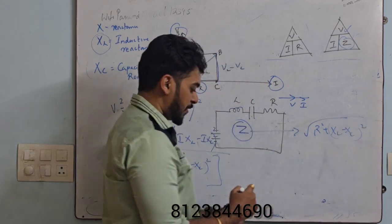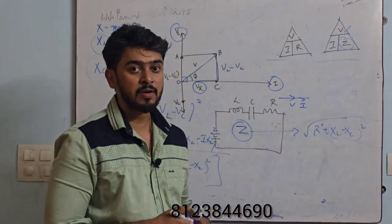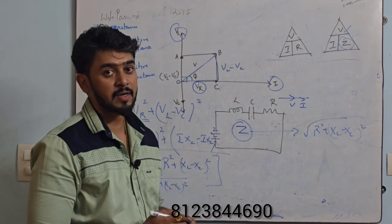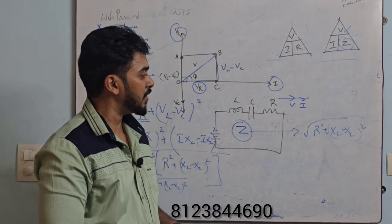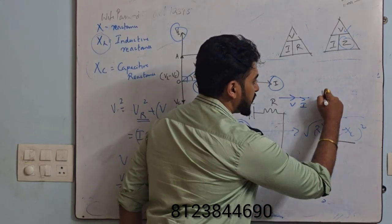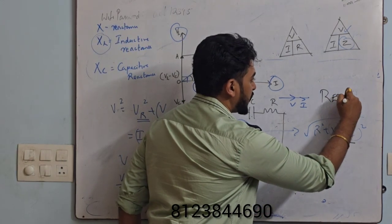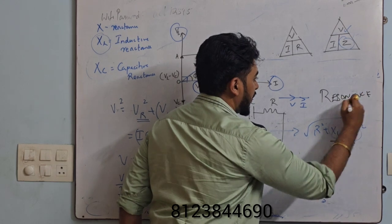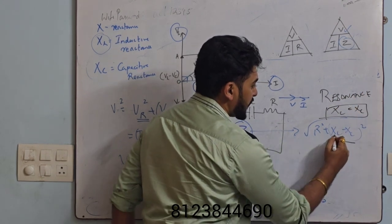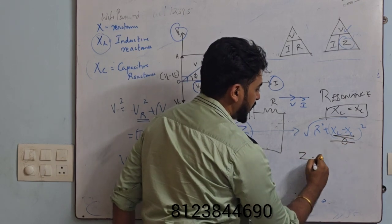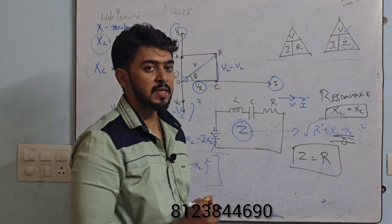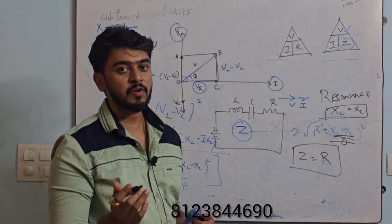And our next topic from this is resonance. Resonance also we can learn from this particular derivation. As you can see here XL minus XC, condition for resonance is what? XL equals XC. So if XL equals XC, this is zero. So my Z will equal R. It's a pure resistive circuit. This is my condition for resonance.